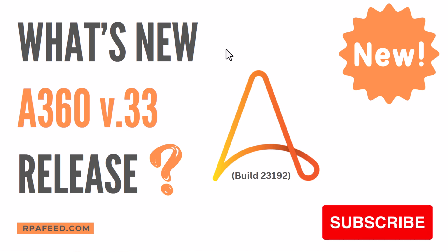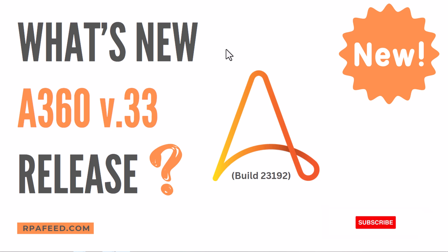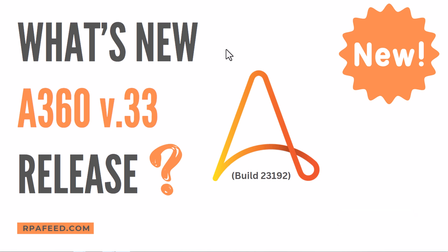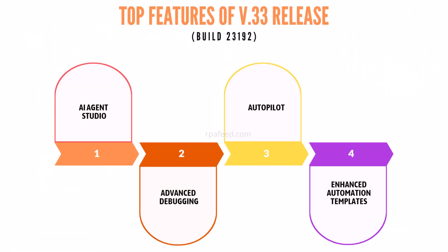Hi guys, welcome to the channel. In today's video, we are going to cover the features that are released as part of version 33. The build version is 23192. I'm covering the top four features, but there are other features available as part of different components of the A360 platform. I'll mention the link of the release notes so you can read about the rest of the features. First is AI Agent Studio.